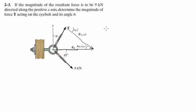The law of cosines says that T is equal to the square root of 8 squared plus 9 squared minus 2 times 8 times 9 times the cosine of 45. This would be around a total of 6.57 kN.